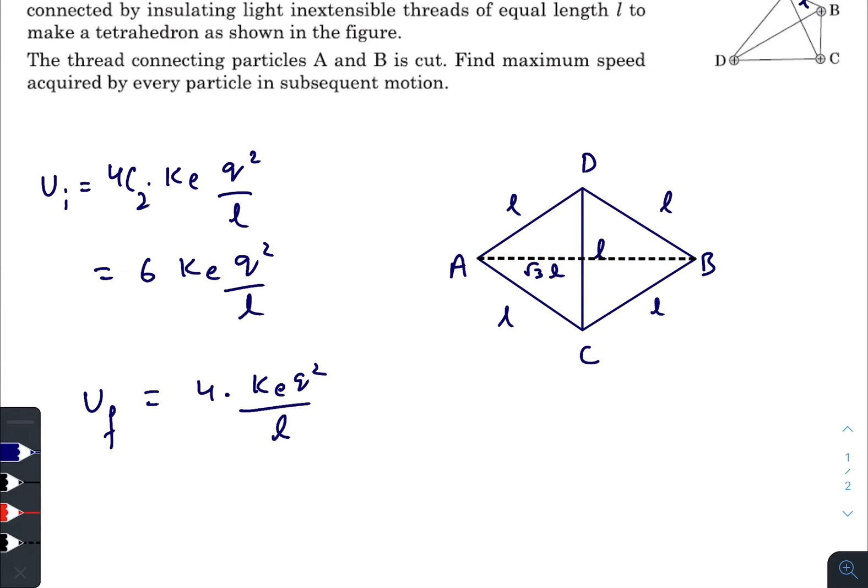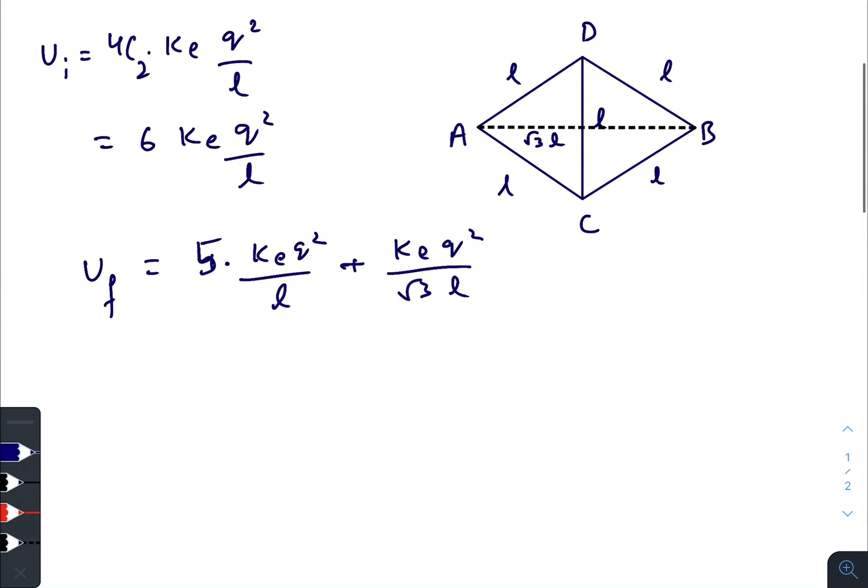So this one will be another ke q squared by l. There will be 5 plus ke q squared divided by root 3 l. So this is the final potential energy. The decrease in potential energy will be